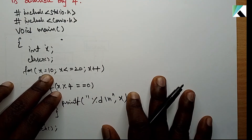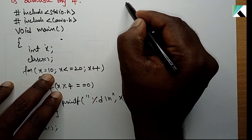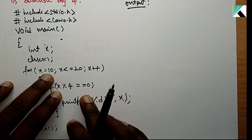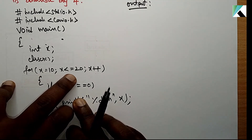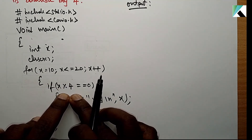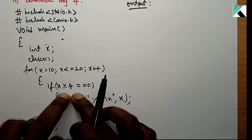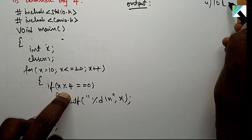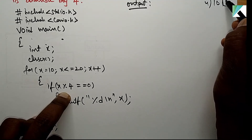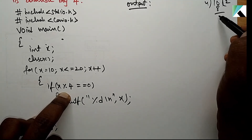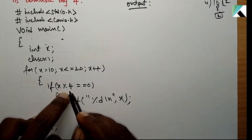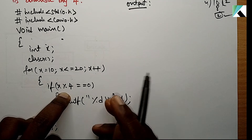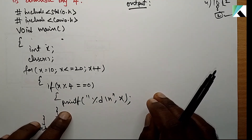Now let's execute the program. First, x is initialized to 10. The condition x <= 20 is true. Then we check x modulus 4: 10 modulus 4 — 4 times 2 is 8, so remainder is 2. Since 2 is not equal to 0, condition is false and x is not printed. Then x increments to 11, again condition is false.